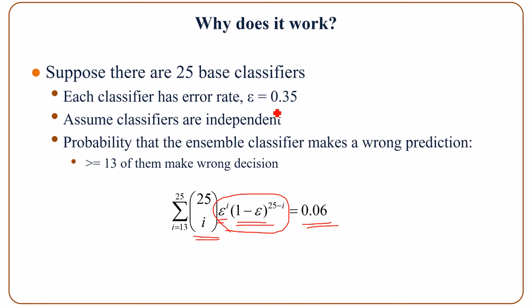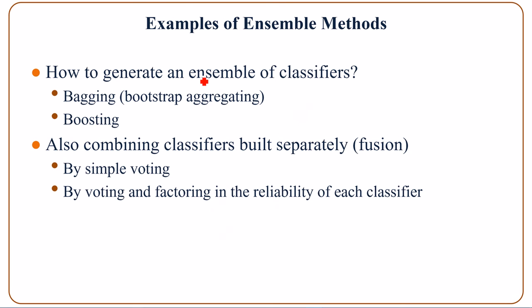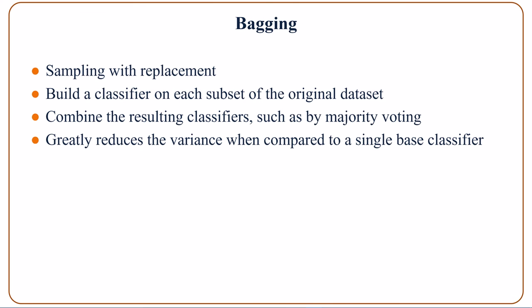6% is much much smaller than 35%. We will talk about the two main methods: bagging and boosting. There is also another method called voting classifier or regression, in which the final decision is given by simple voting or by voting weighted by the reliability of each classifier.